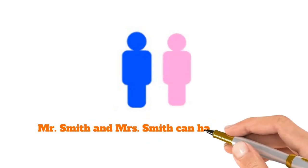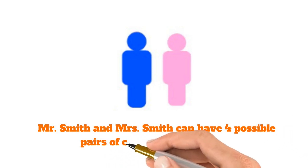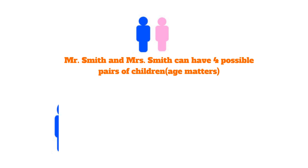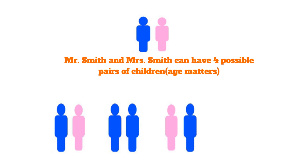Mr. Smith and Mrs. Smith can have four possible pairs of children, where age does matter. These four possible pairs are an older boy and a younger girl, two boys, an older girl and a younger boy, or two girls. But notice that two girls are not possible because Mr. Smith has at least one boy. Thus, we can cross that out.